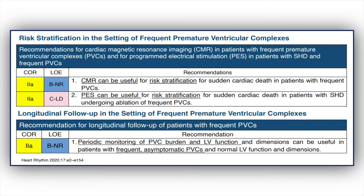As a Class IIA recommendation, we can use CMR for risk stratification of sudden cardiac death in patients with frequent PVCs, and especially in those with structural heart disease. In addition, we can use programmed electrical stimulation for risk stratification in these patients.